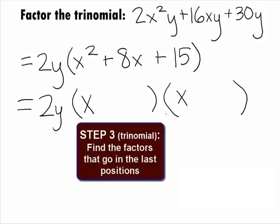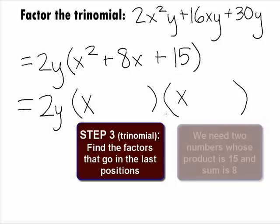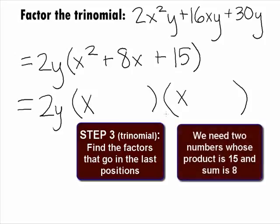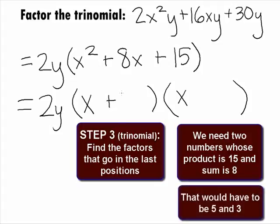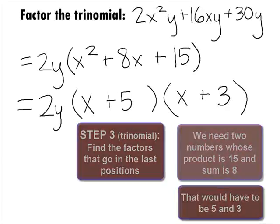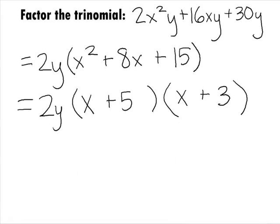In Step 3 of factoring the trinomial that is in the parentheses, we want to find the factors that go in the last positions. Because it is the reverse of the FOIL method, this means we are looking for two terms whose product is 15 and sum is 8. Those magic numbers are 5 and 3. So, putting those into the last positions of our binomial factors, we get our final answer of 2y times x plus 5 times x plus 3.